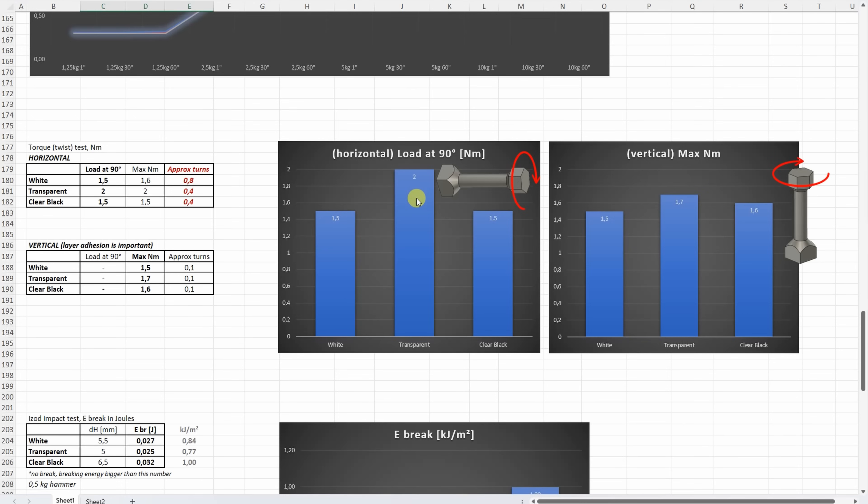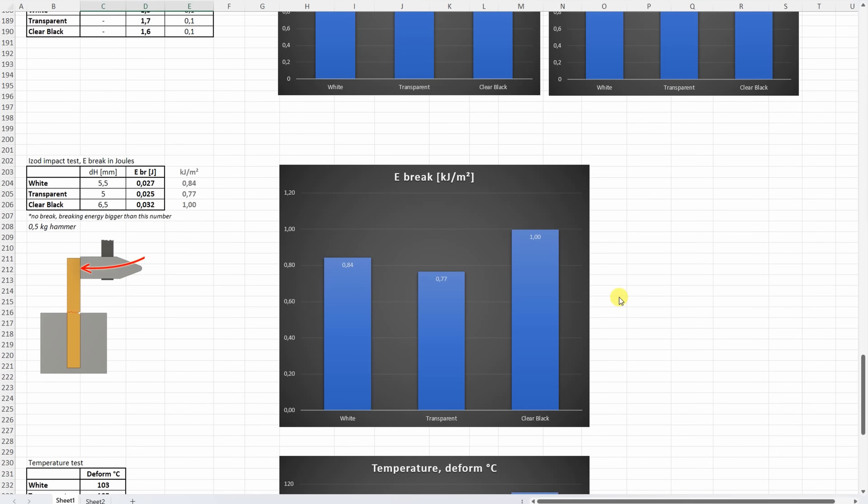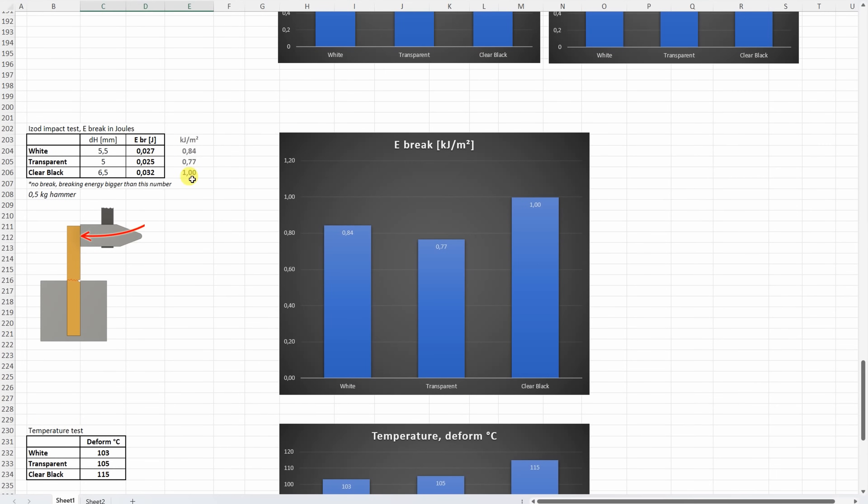And these test objects are printed in vertical position. And here we can see a little bit smaller difference between these colors.